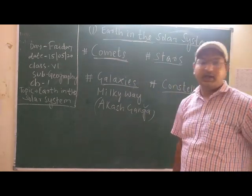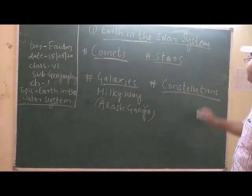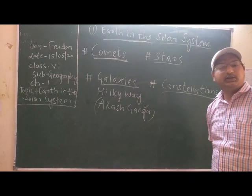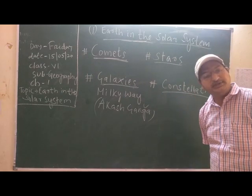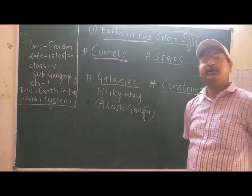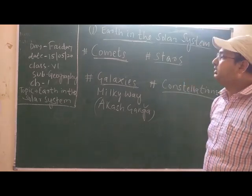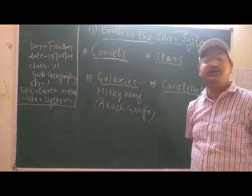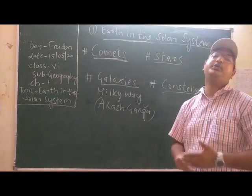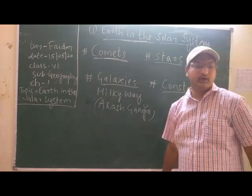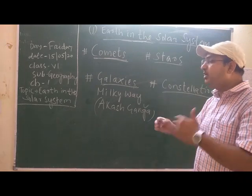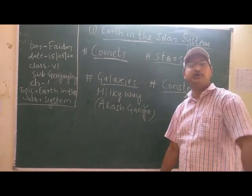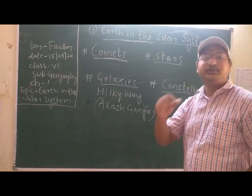The last topic in this chapter 'Earth in the Solar System' is constellations. What are constellations? A group of stars that form a particular shape is known as a constellation. For example, you must have seen in the sky Saptarishi — it is a shape of like seven stars making a group.